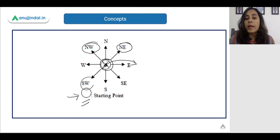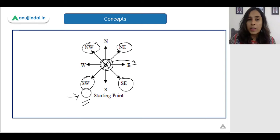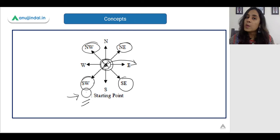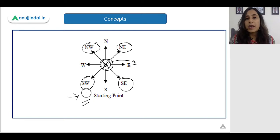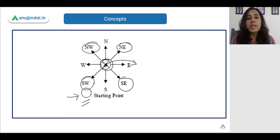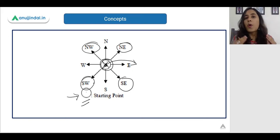Now these four directions are called as derived directions because they are not the primary directions. So we have North-East which is to the North as well as to the East. Then there is North-West which is to the North as well as to the West. Something placed in South as well as West is called South-West. And there is South-East which is the combination of South and East. As we progress into the problems, I will be teaching you more concepts, but the basic knowledge of what directions are is important to begin solving problems.